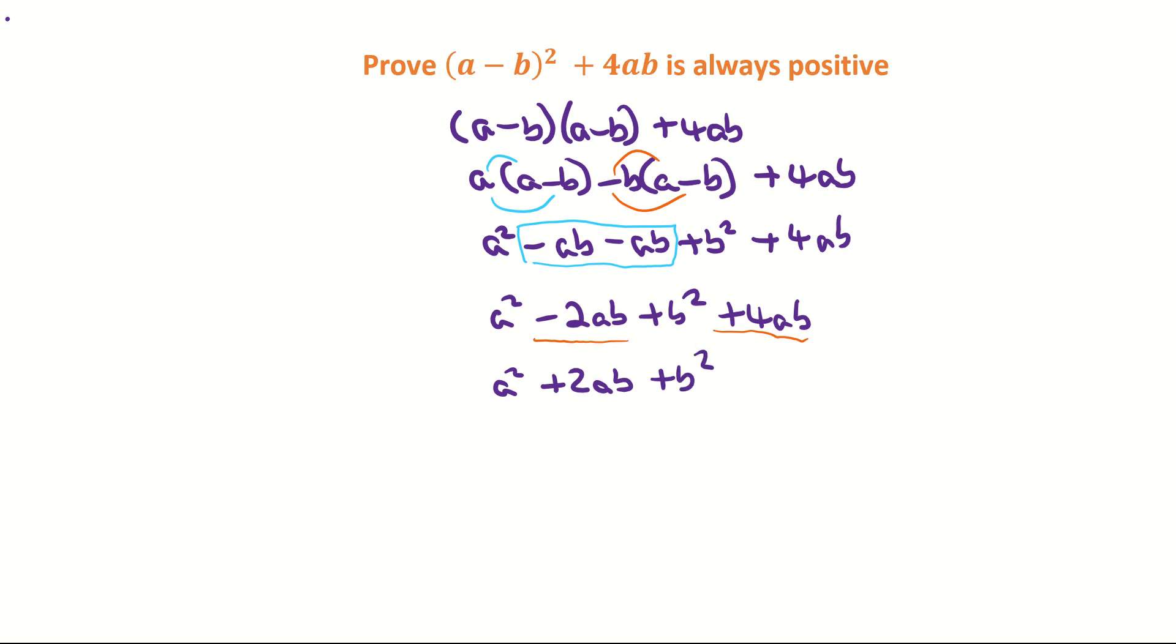Now the question here wants us to show that this is always positive. So what I'm going to do here is I'm going to open up this 2ab. So I'm going to rewrite the 2ab as 1ab + 1ab. So I'm going to go a² and I'm going to call the 2ab plus 1ab + 1ab, because if I add 1ab + 1ab I get back to the 2ab, plus the b².